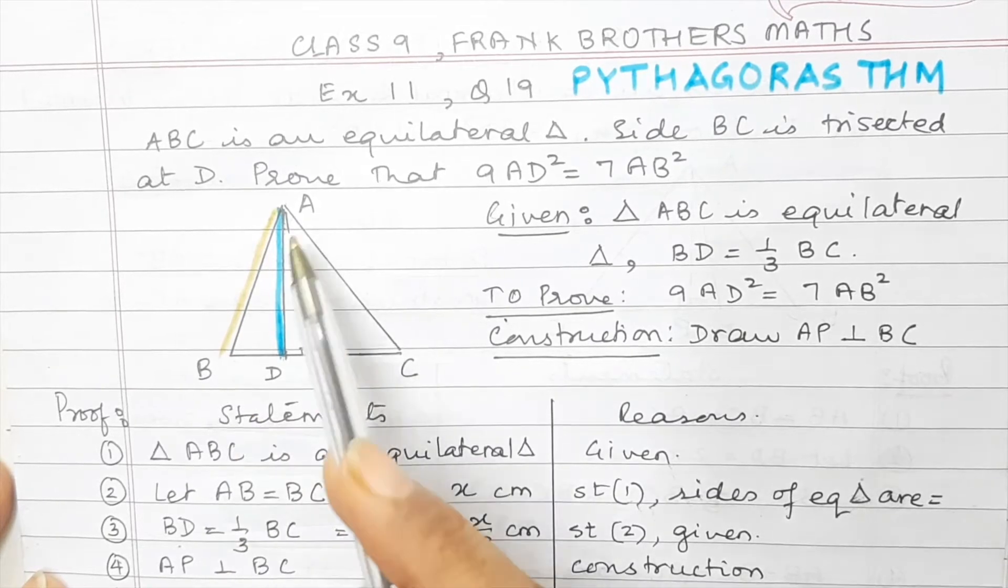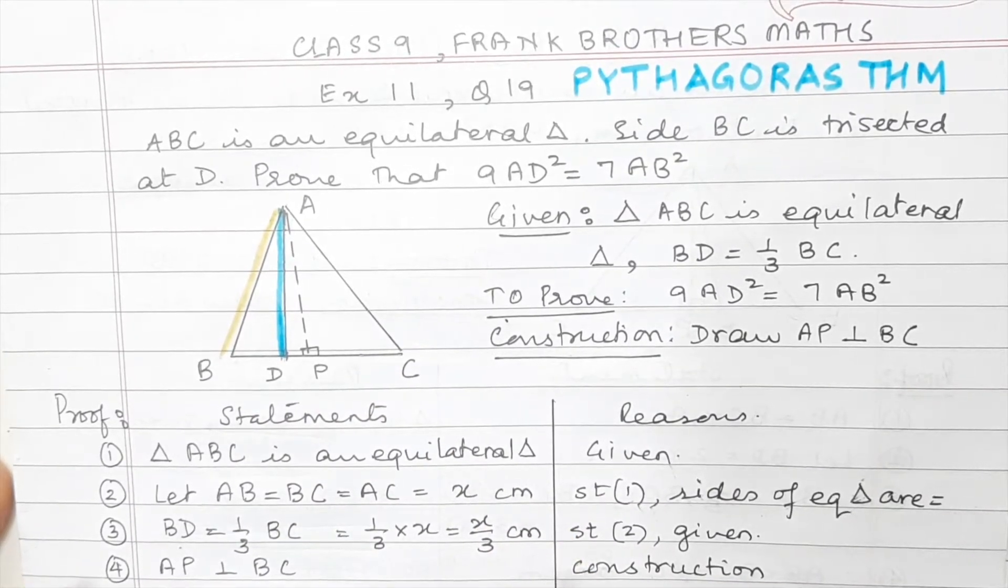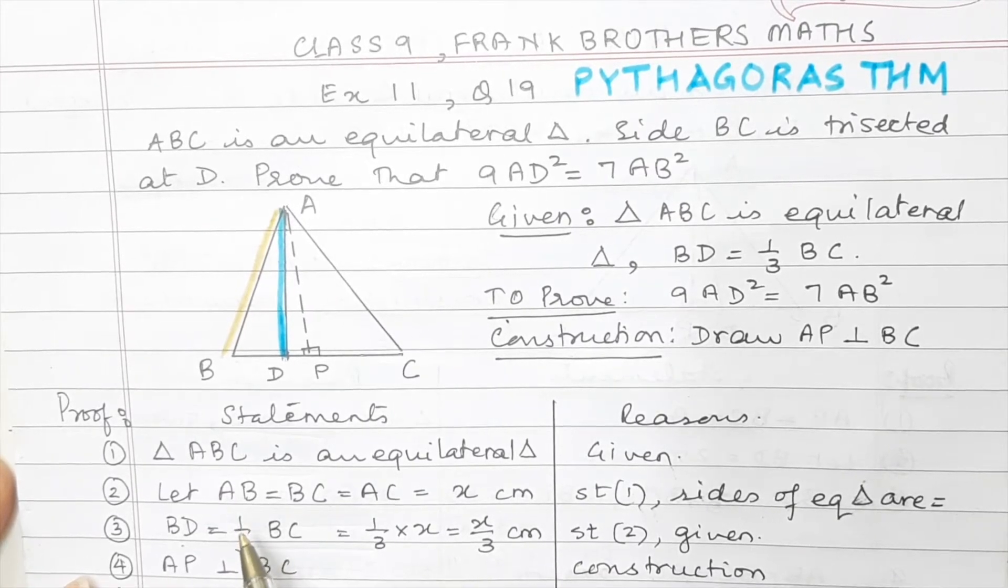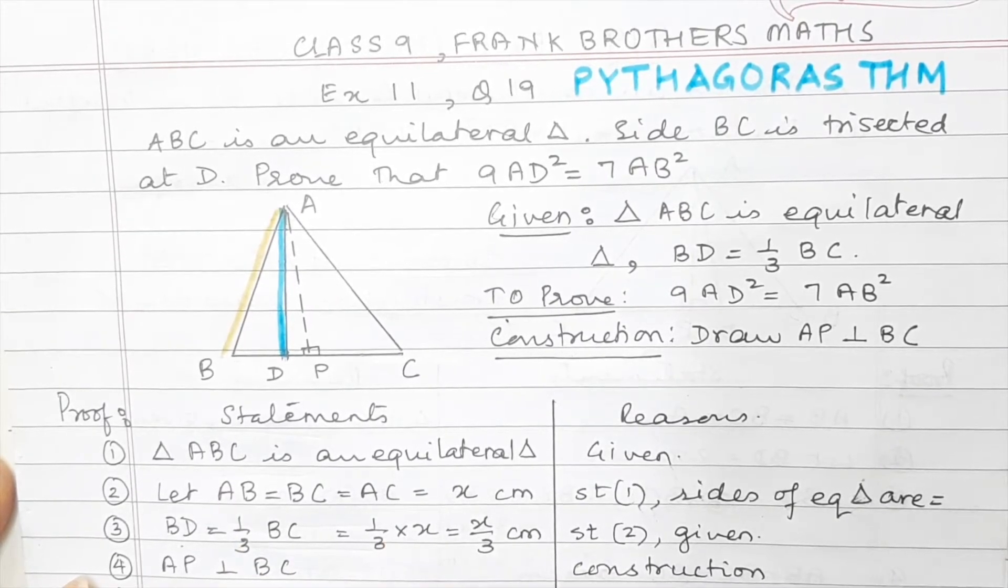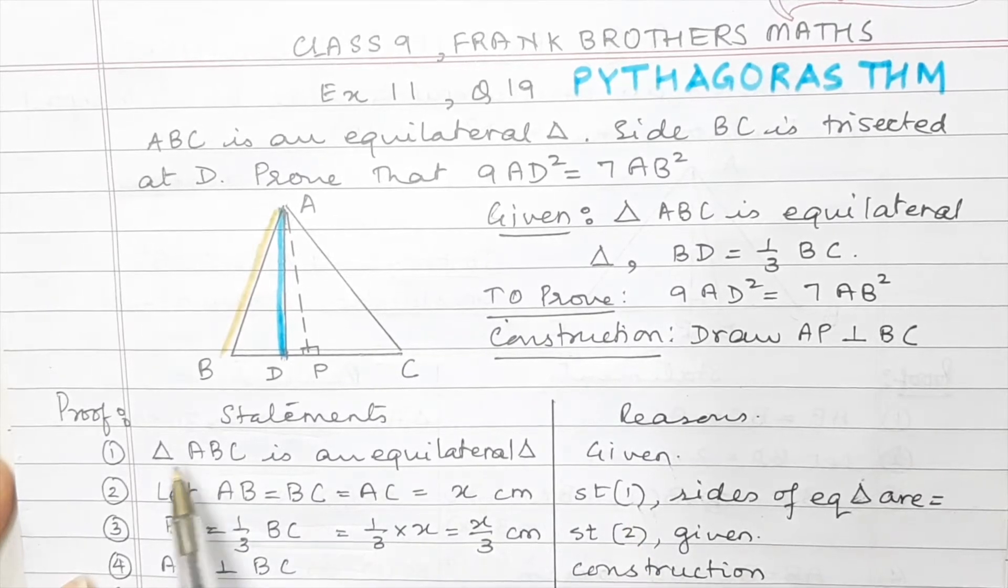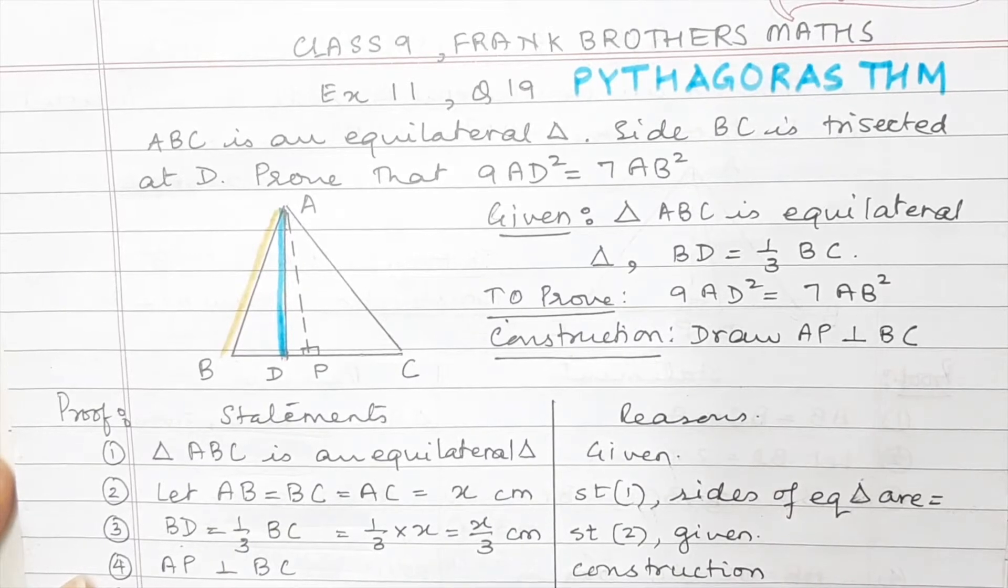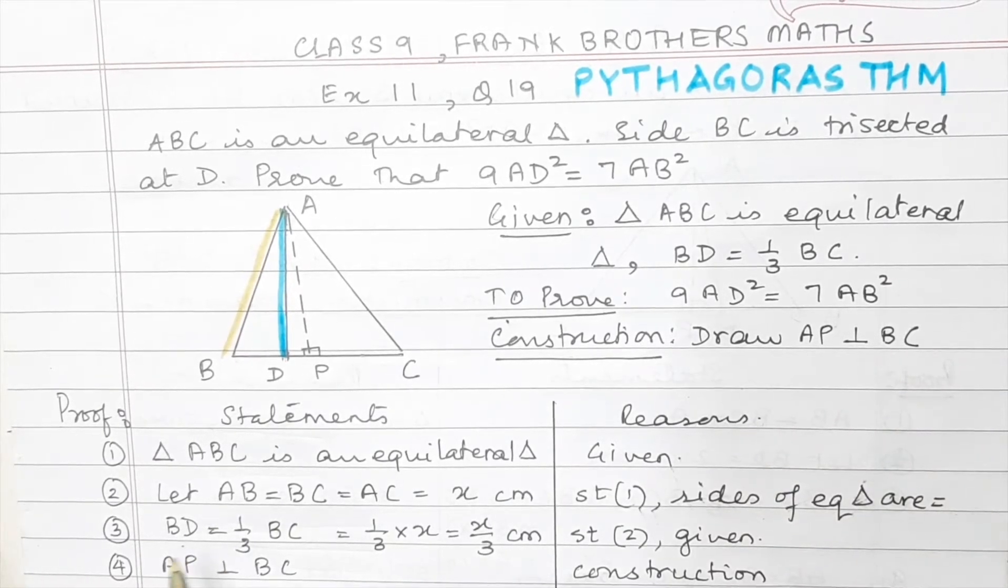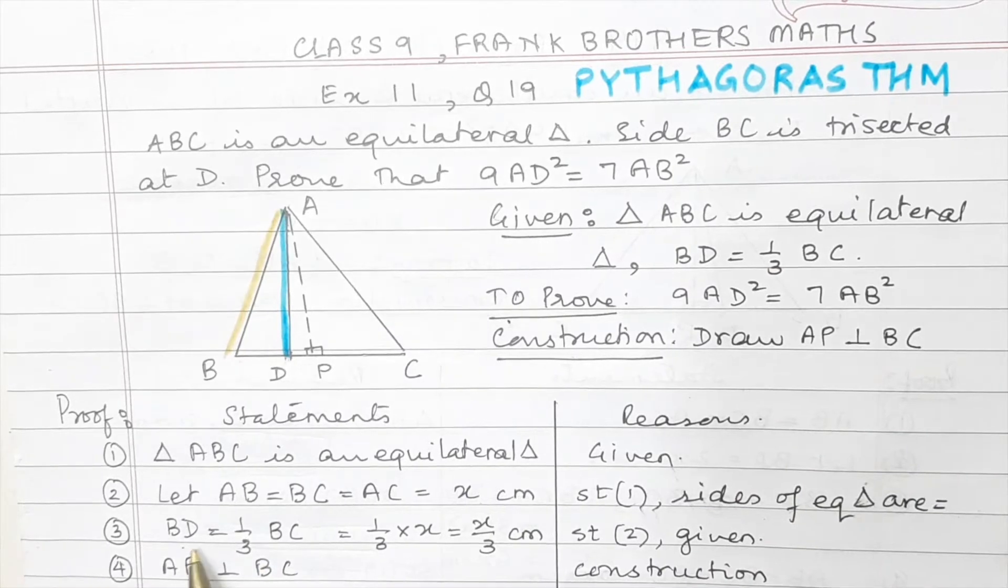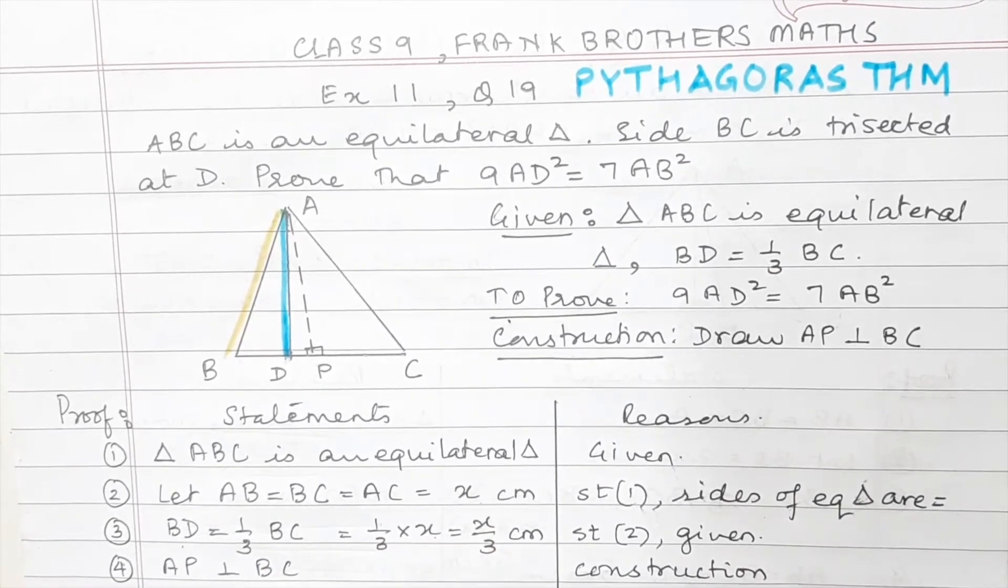Therefore, AB, BC and AC, they are going to be equal sides. So we are going to say, let AB equal to BC equal to AC equal to X centimeter. And that is from this statement one, because sides of the equilateral triangle are equal. Then we also write BD. See there, it is one third of BC. So BD becomes one third of X, that is X upon three centimeter.